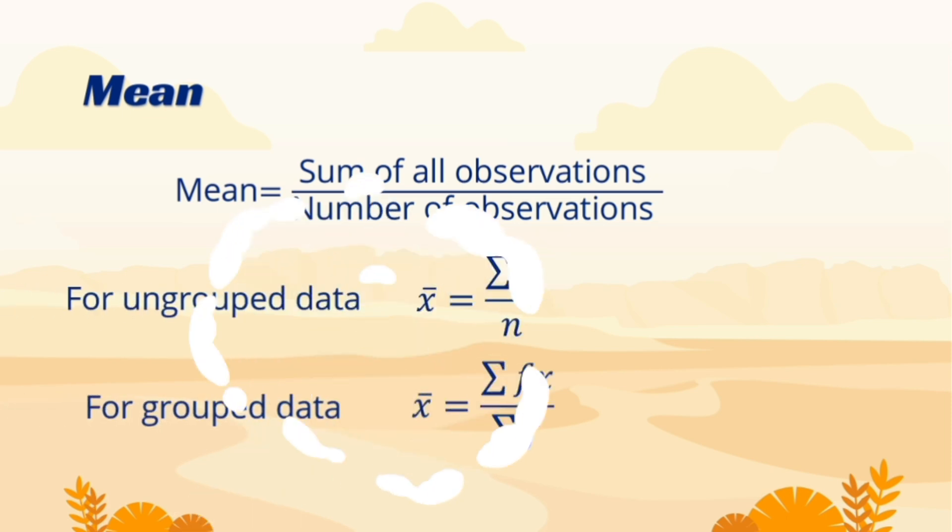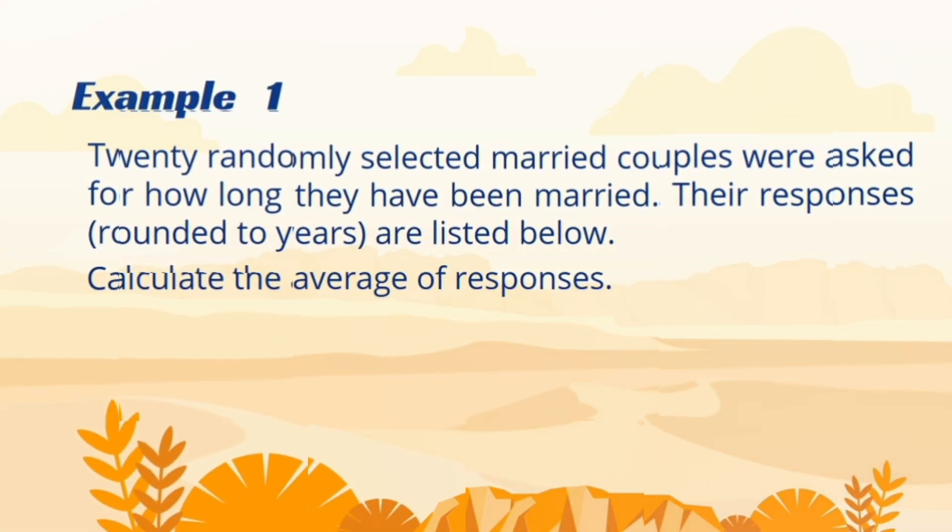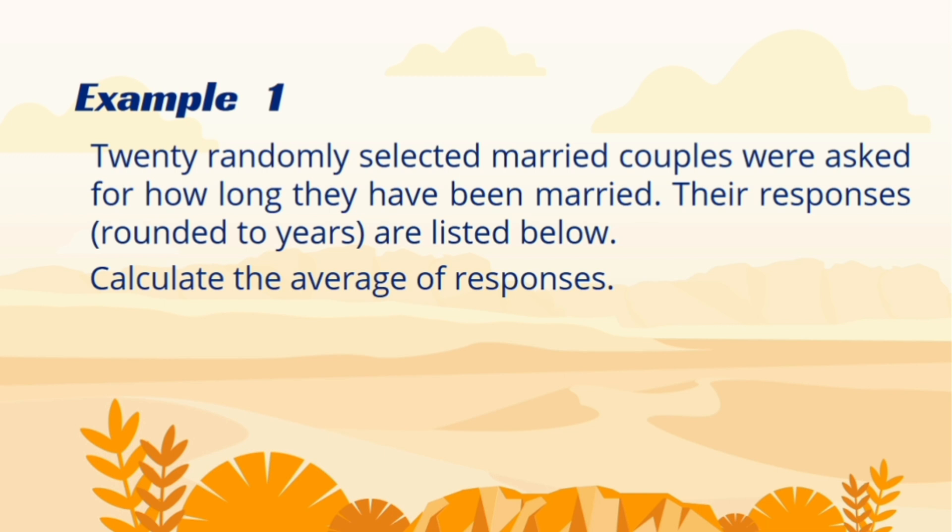For grouped data, due to the involvement of frequency table, we use this formula and we can read it as x̄ equals summation fx over summation f. To calculate the average value, now we can use some practical examples.